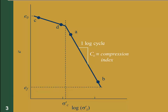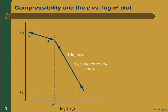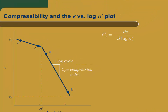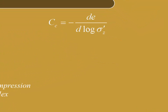The slope of the virgin curve per log cycle is called the compression index and denoted C sub c. By definition, this is the change in void ratio per change in the log of effective stress. The definition contains a negative sign because the void ratio decreases as the soil compresses and we want a positive value of C sub c to represent a positive compression.